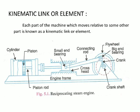The first important term to learn is the kinematic link and element. When any machine is operating, its parts are connected to one another — for example in a reciprocating steam engine you have the cylinder, piston, small end bearing, engine frame, and crosshead. All parts of the machine are connected, and through this connection motion is transmitted from one part to another.